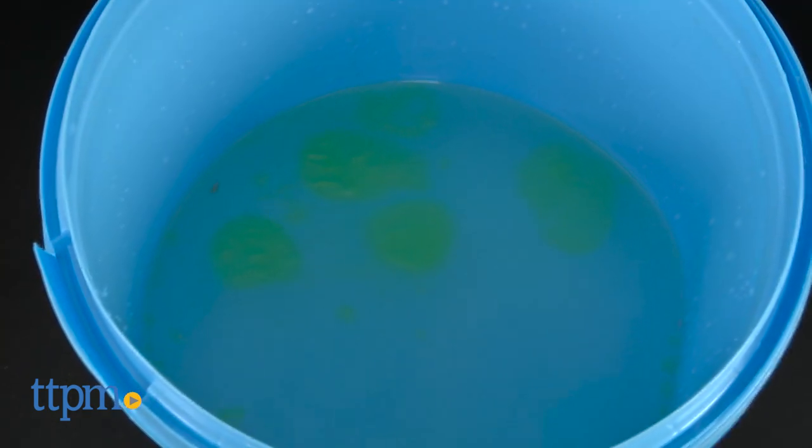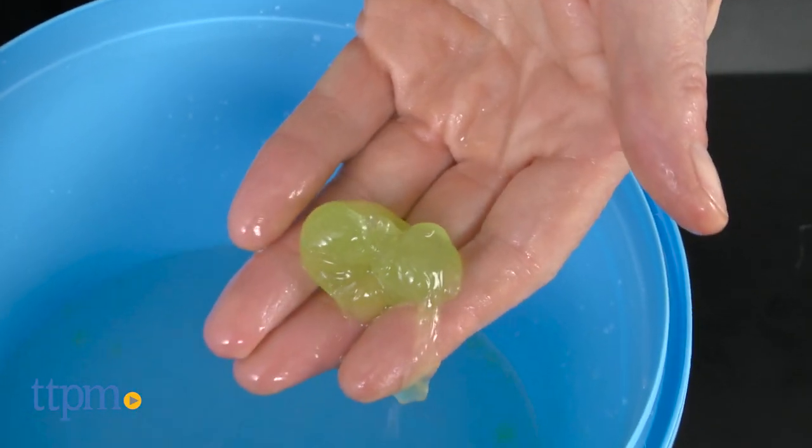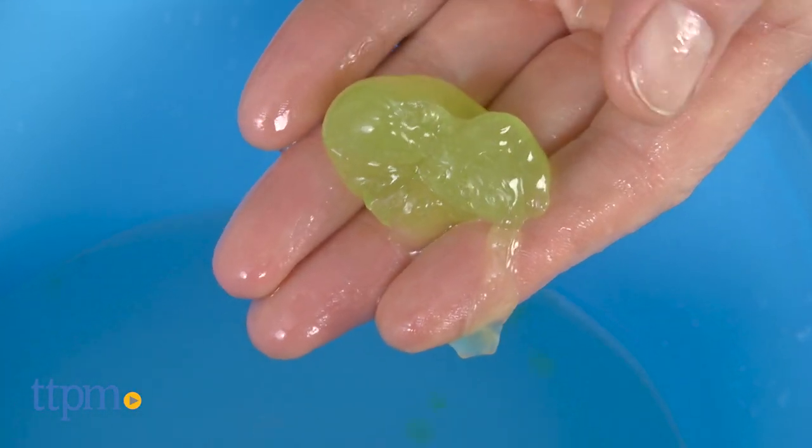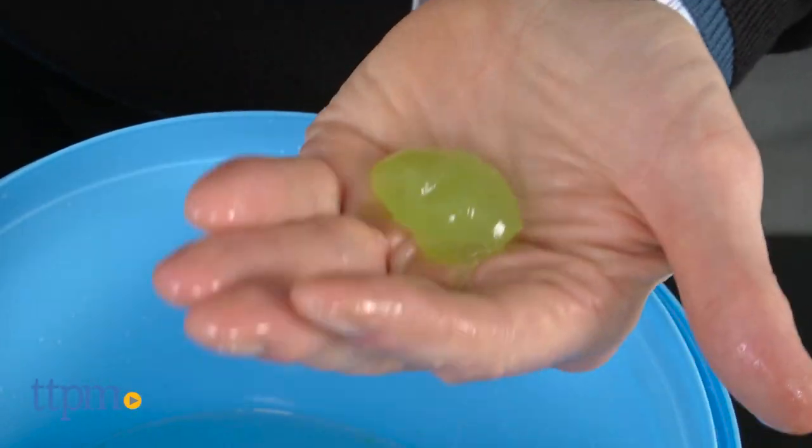So once you have a good supply of booger balls, you're ready for a battle. Pick them up and you'll feel that a kind of skin has formed over the booger mixture, but they're still soft and slimy on the inside. This is exactly what you want.